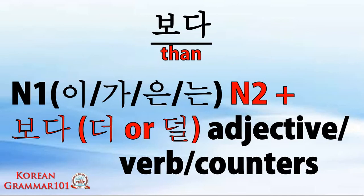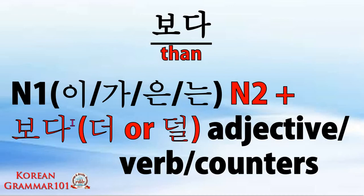How about the expression 보다 (buddha)? What is 보다? 보다 literally means 'than'. In this sentence construction, we have noun one and noun two. In our previous examples with 더 and 덜, we had no comparison with another noun. But now we have noun one and noun two, so we can see clearly what we are comparing against. The first noun takes either subject markers 이/가 or topic markers 은/는, and the second noun takes 보다, followed by 더 for more or 덜 for less, then the adjective, verb, or counter.